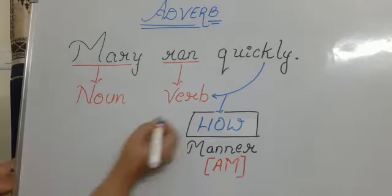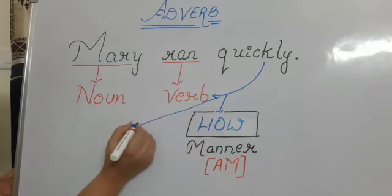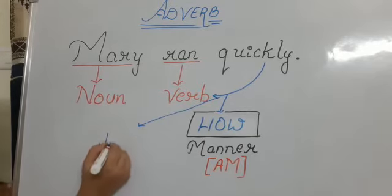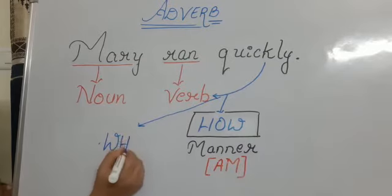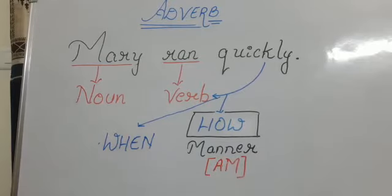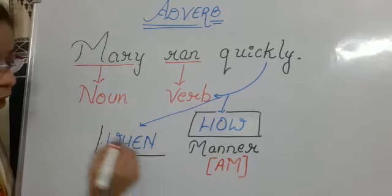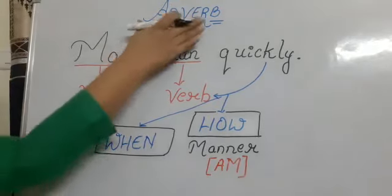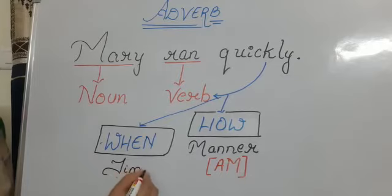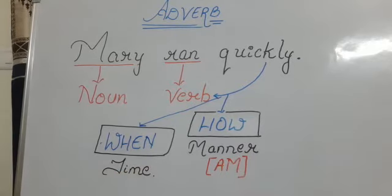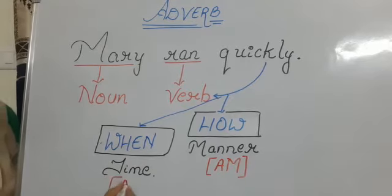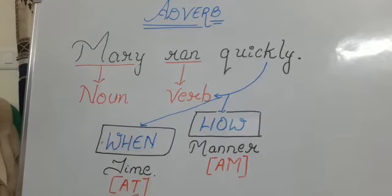Another word that describes about the time of the verb, or when the action has been performed, when the work has been performed by the noun. So it is defining another type of adverb, that is adverb of time. Adverb of time can also be called A-T, adverb of time.